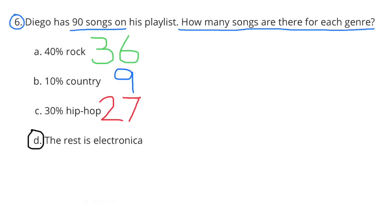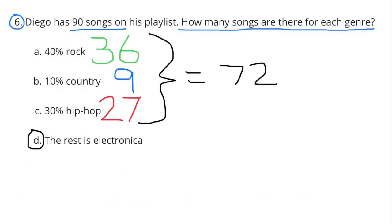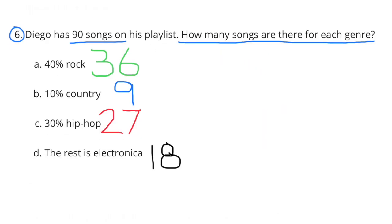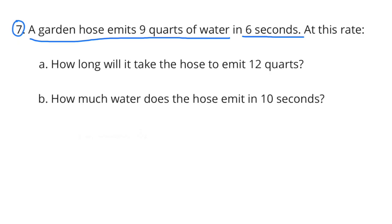D: the rest is electronica. Adding up the rock, country, and hip hop songs gives 72 songs out of 90. Subtracting those 72 from the 90 songs on his playlist leaves 18 songs in the electronica genre.